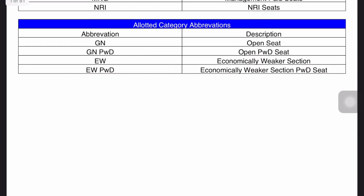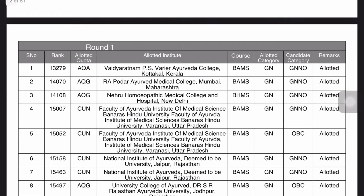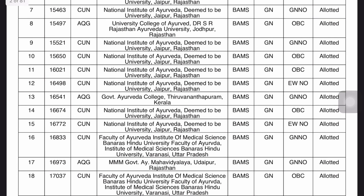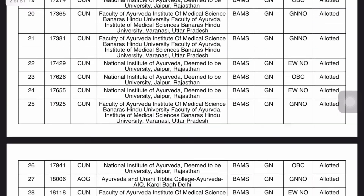Here you can see all the abbreviations — just note them down. You can see: Rank, Allotted Quota, Allotted Institute, Course Allotted, Category, Candidate Category, and Remarks. This will help you a lot — if you see your rank from this and make up your mind, I assure you this will help you a lot. That's it for today's video, guys.